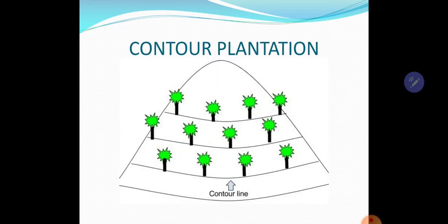Then plantation should be carried out using the contour method in sloped regions. You can see over here in the image — contour lines with a tree line. It stops soil erosion, holds the ground, and stops the speed of the water. Then the roots of these trees hold the ground soil properly and stop it from being eroded.